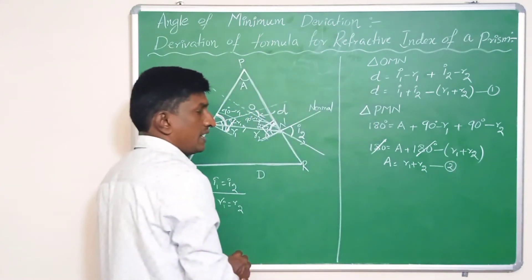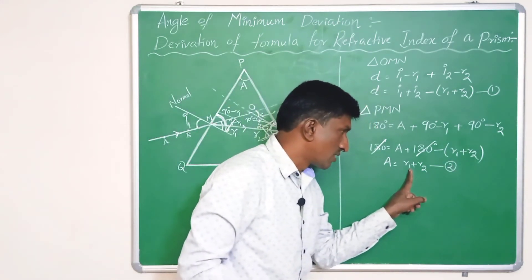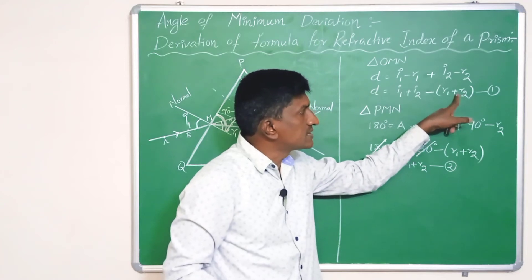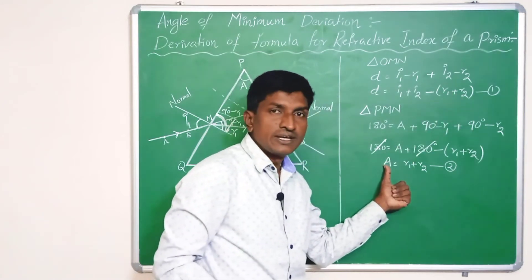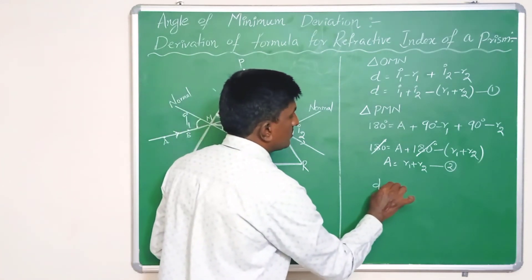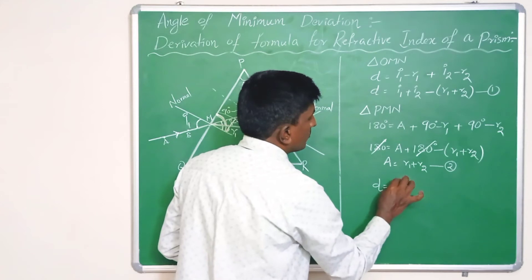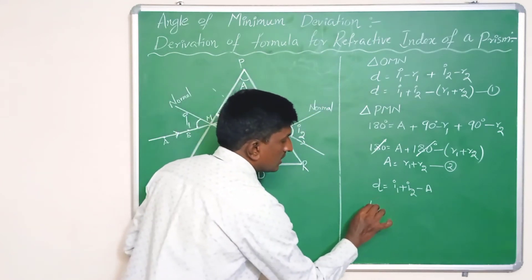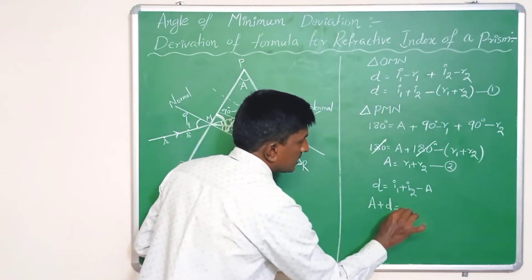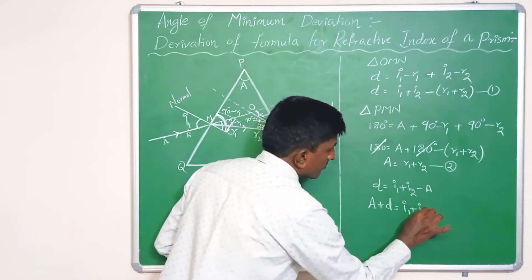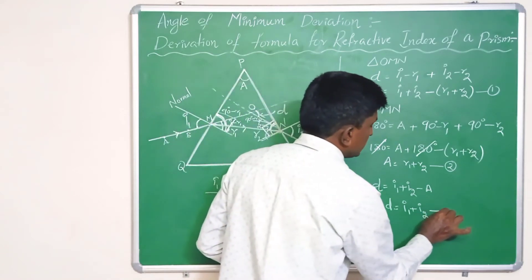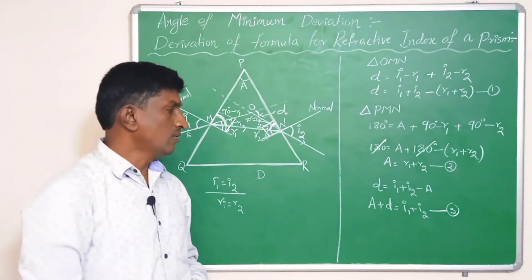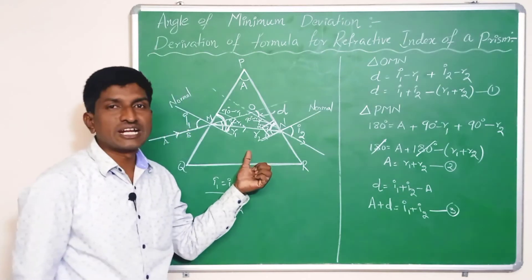Substituting the value of r1 + r2 from equation 2 into equation 1: D = i1 + i2 − A, or rearranging, A + D = i1 + i2. This is equation 3.